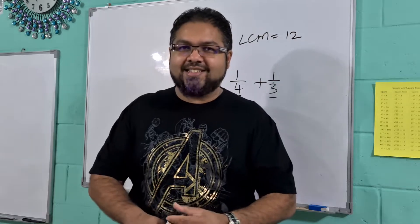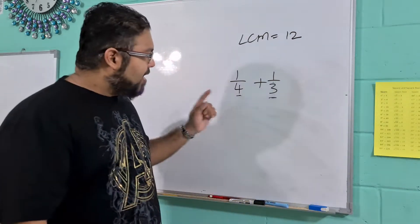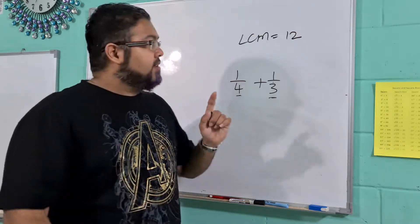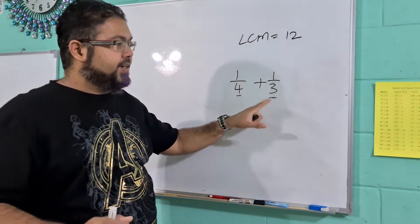Making sure that I'm not blurry like the video that we put on Facebook last night, which I kind of did by myself. Okay, so we learned that the LCM is 12. Recap, LCM of 4 and 3 is 12.